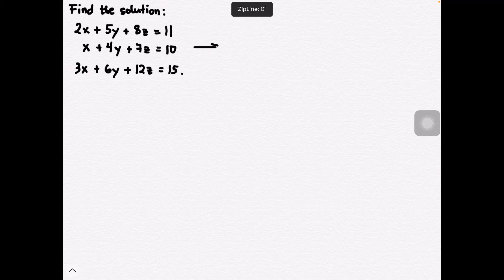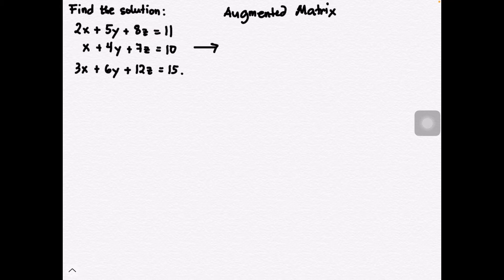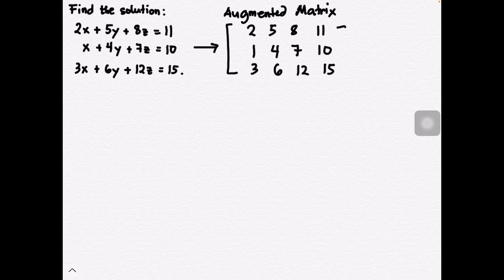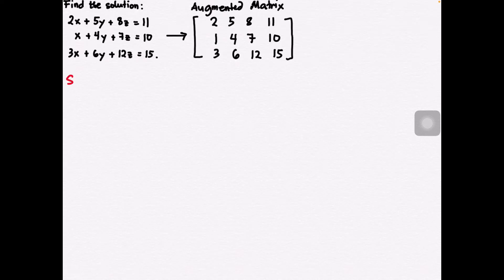Let's first form the augmented matrix of this given linear system. In an augmented matrix, we have the coefficients of the linear system with respect to the given variables, and the last column contains the constants. The first column has the coefficients of x, the second column has the coefficients of y, the third column has the coefficients of z, and the last column has their corresponding constants.